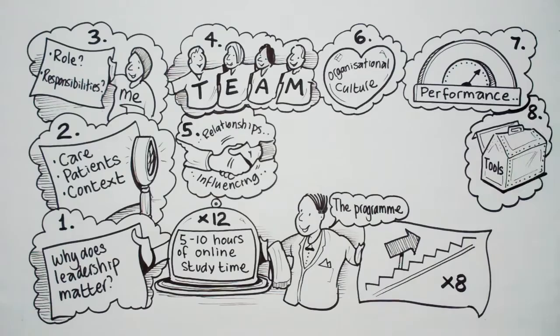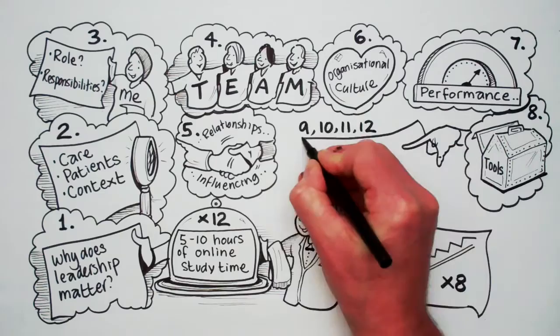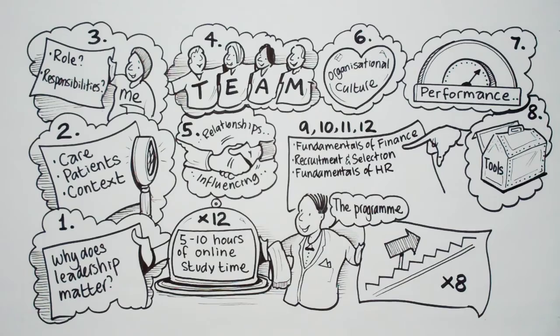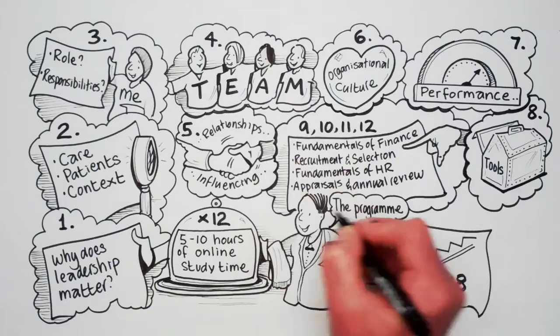The other four units, units nine, ten, eleven and twelve are flexible and can be taken at any point you choose. These are the units relating to the core management skills of fundamentals of finance, recruitment and selection, fundamentals of HR, appraisal and annual review.